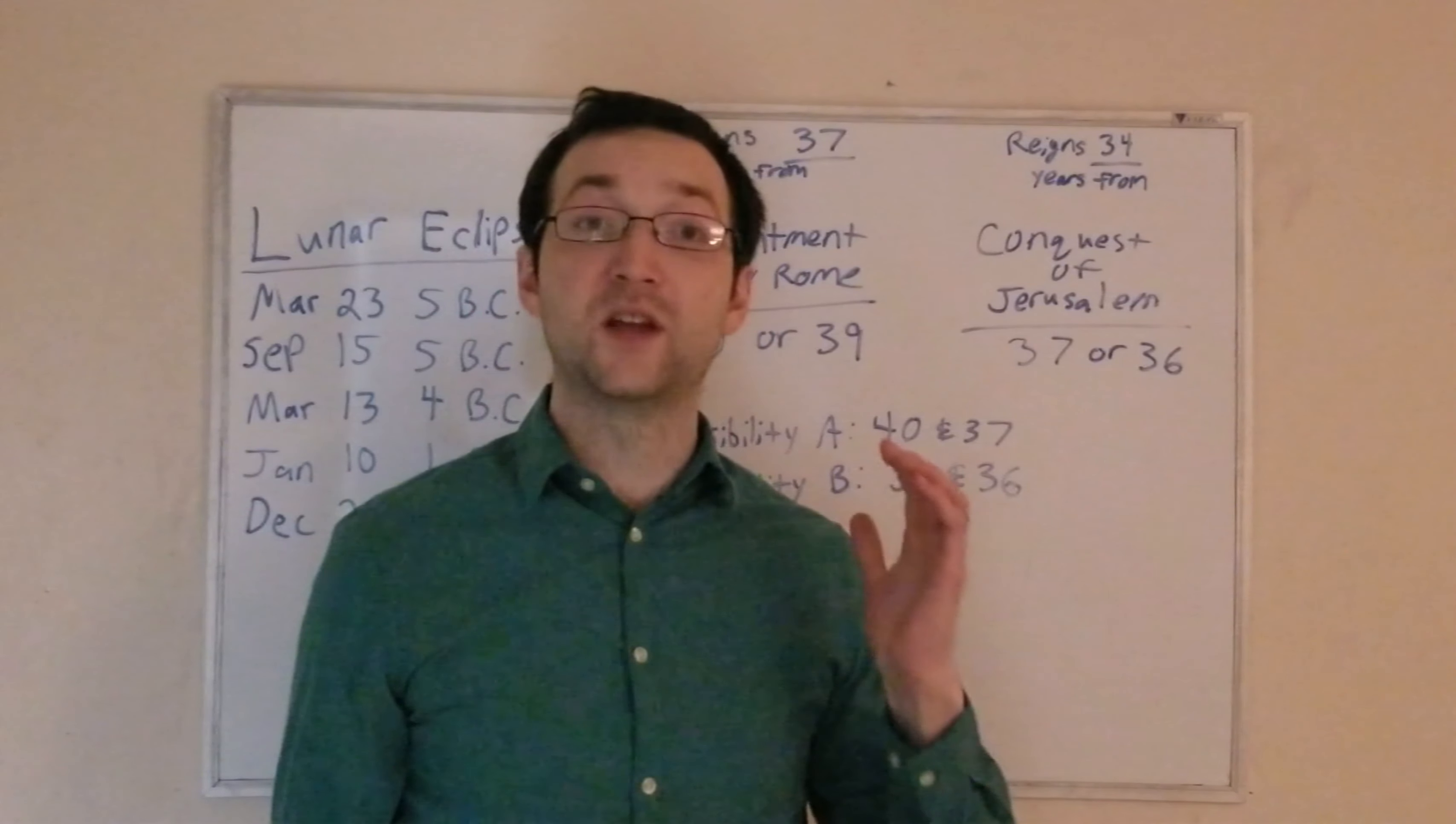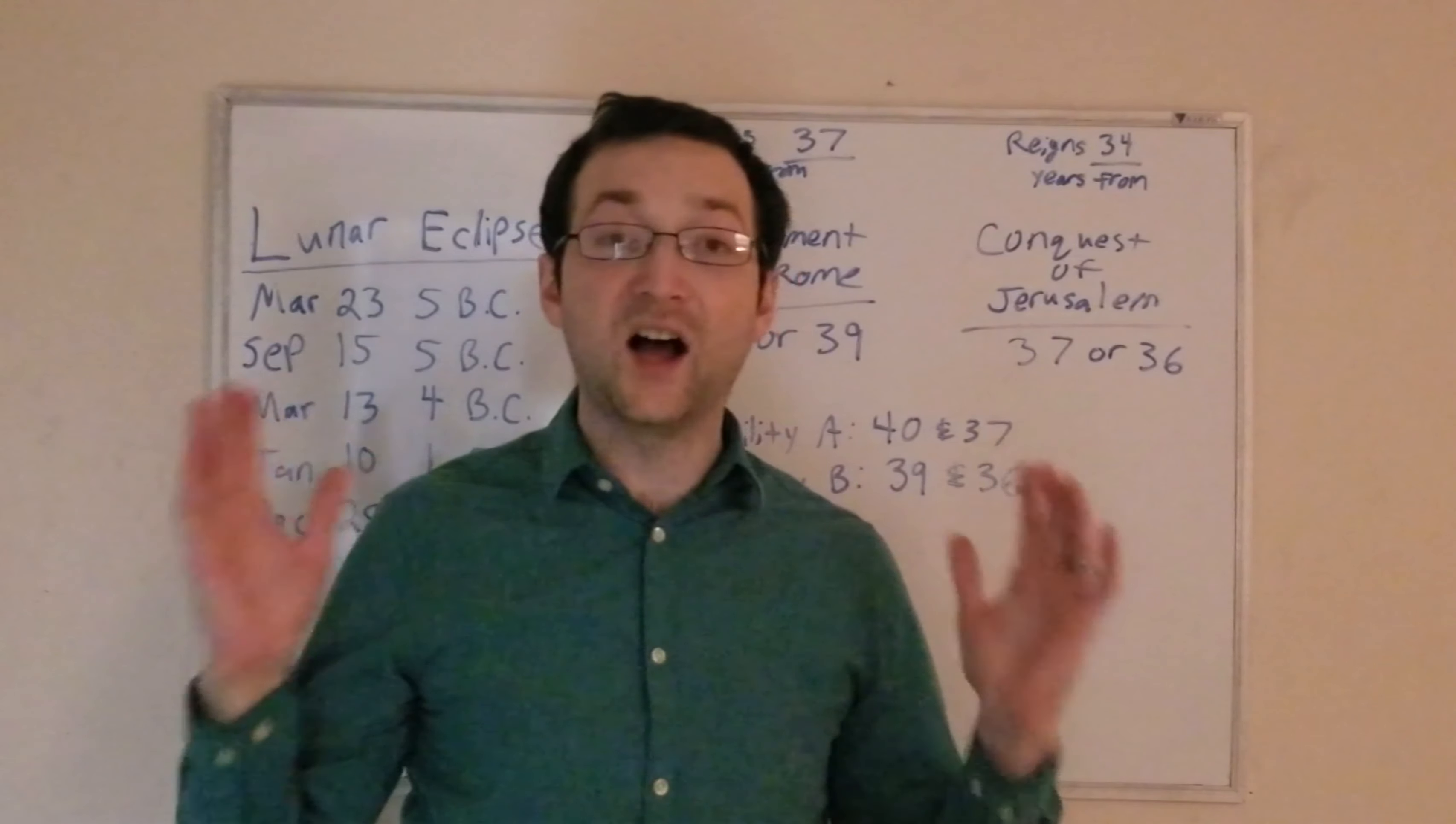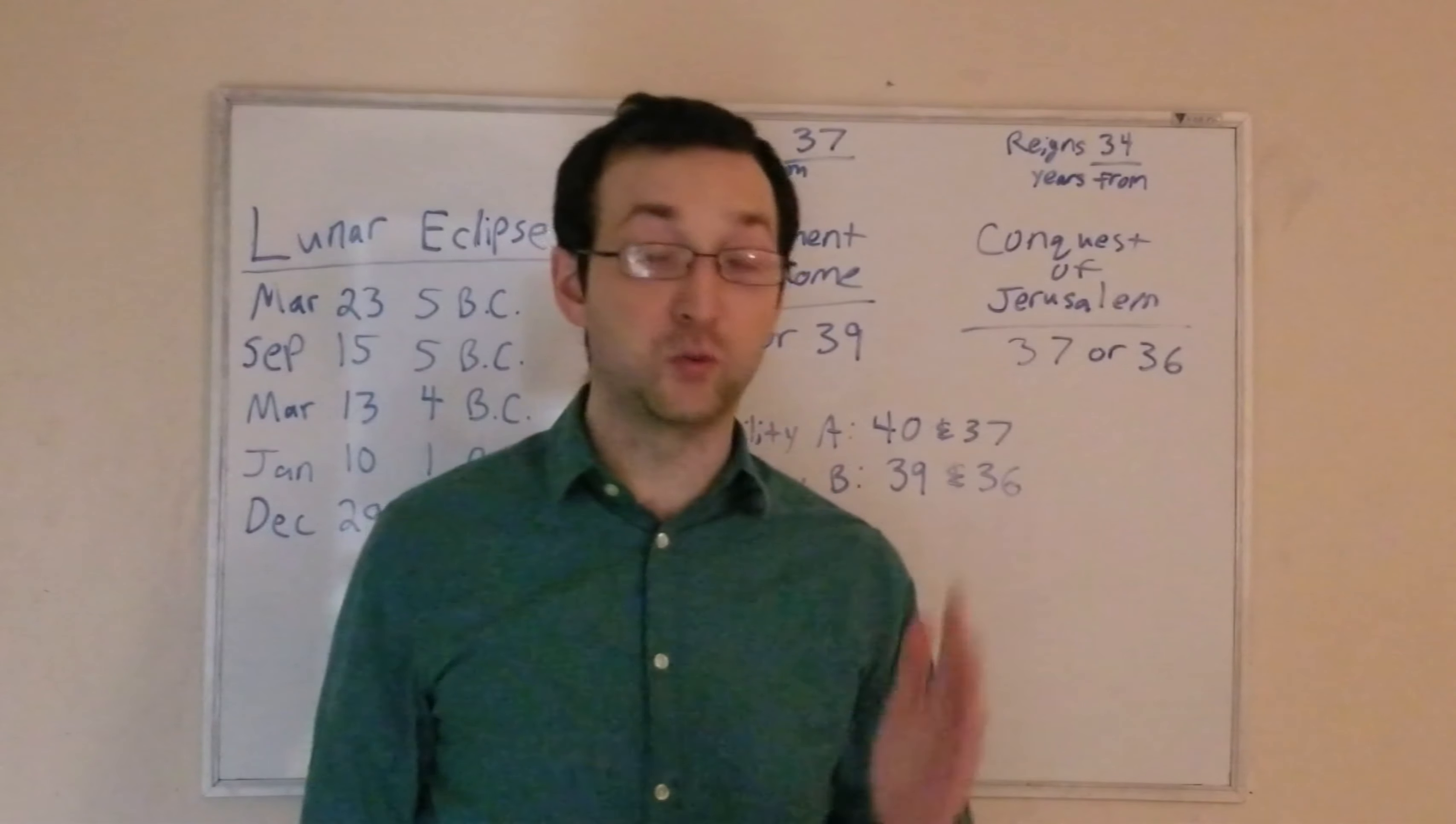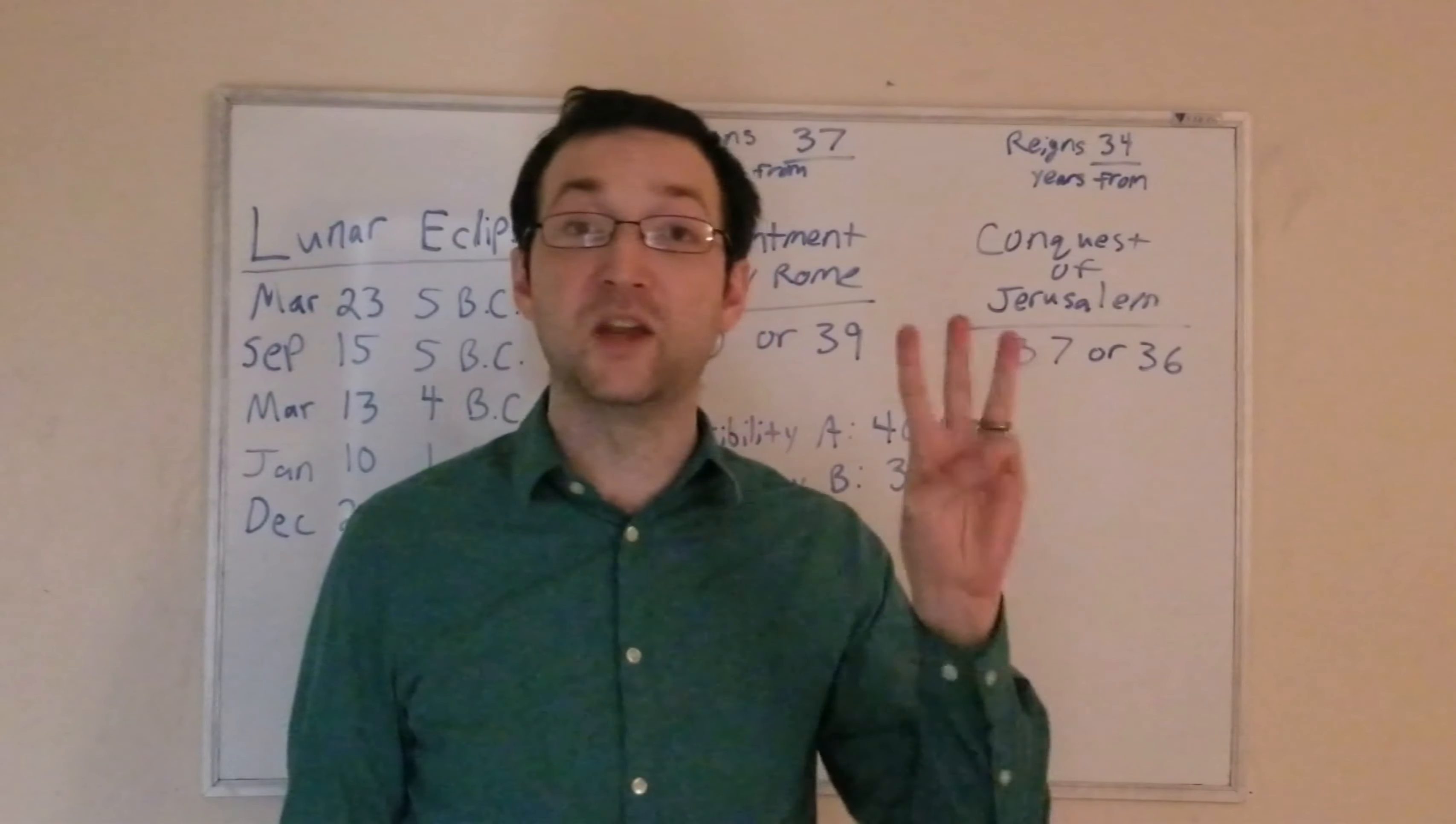Then, Schur assumes that Josephus is reckoning Herod's reign using inclusive counting. What is that? Well, at a high level, inclusive counting says the first 12 months are year one, and then as soon as you hit 12 months, you're now in year two. 12 to 24 months are year two. As soon as you hit 24 months, you've reigned for two years, but you're now in year three.